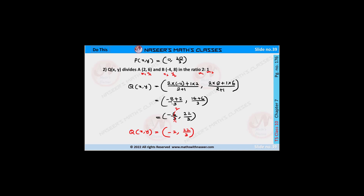2×(-4) = -8, 1×2 = 2, denominator 2+1 = 3, and 2×8 = 16, 1×6 = 6. Then -8 + 2 = -6 and 16 + 6 = 22. We can write -6/3 and 22/3. Simplifying: -6/3 = -2. Therefore the second point Q(X, Y) = (-2, 22/3), which divides the line segment in the ratio 2:1.